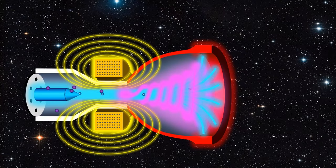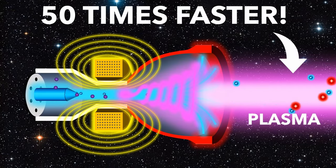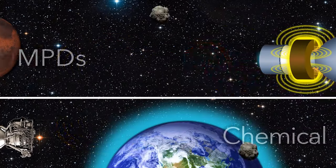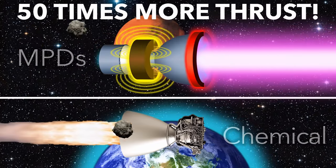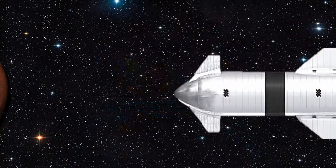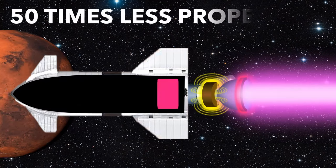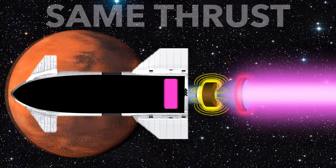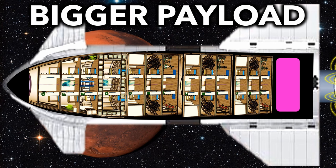Instead, MPDs fire plasma, but up to 50 times faster than a chemical rocket, in theory making 50 times more thrust for the same amount of propellant, or in practice, needing 50 times less propellant for the same thrust, meaning you can take much more useful stuff on your trip to Mars.